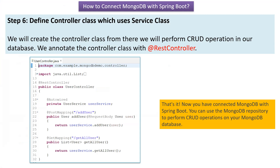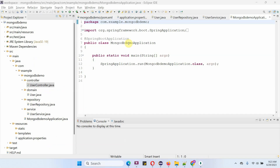Step 6 is to define the controller class which uses the service class. We create a controller class from which we will perform CRUD operations, and we annotate it with @RestController. Here you can see the UserController class with the @RestController annotation. The UserService object is auto-wired, and it has two methods: addUser to create a user, and getAllUser to retrieve all users from the database. Here is the main MongoDB demo application class. I am now going to start this Spring Boot application.